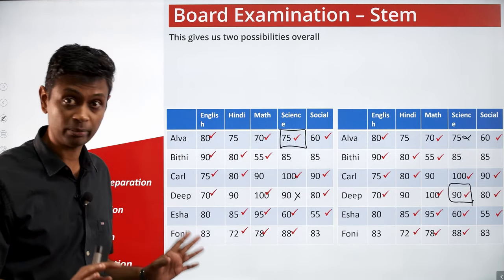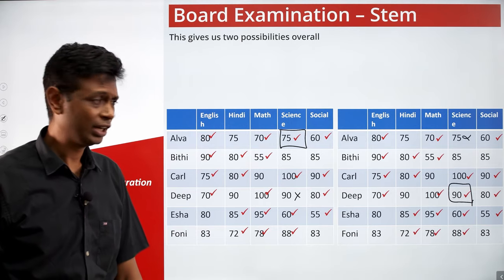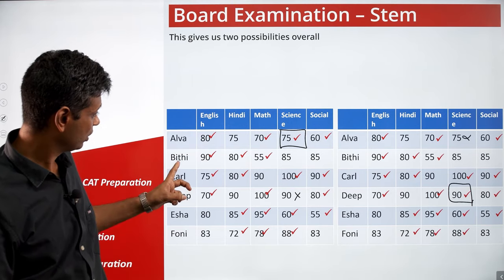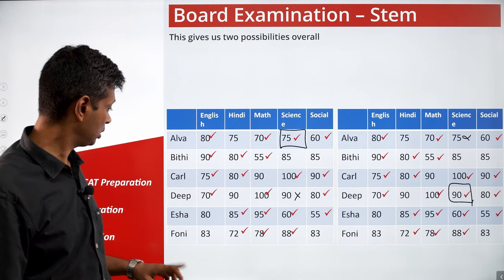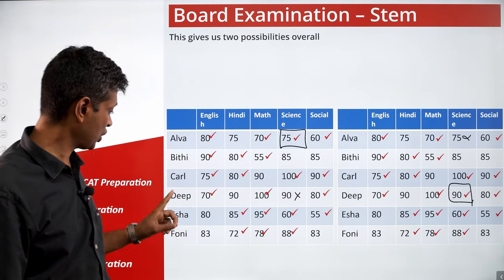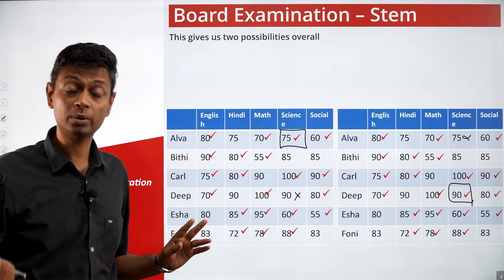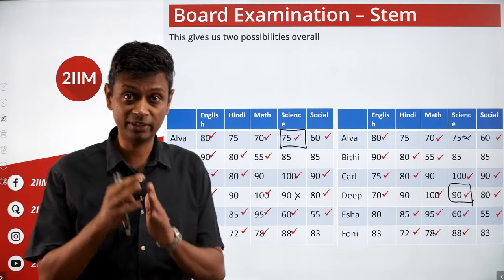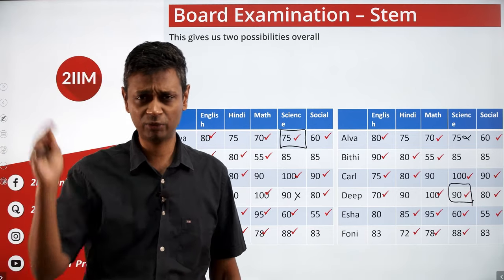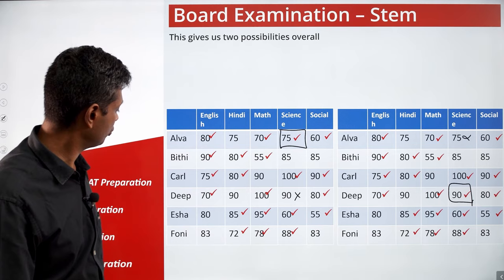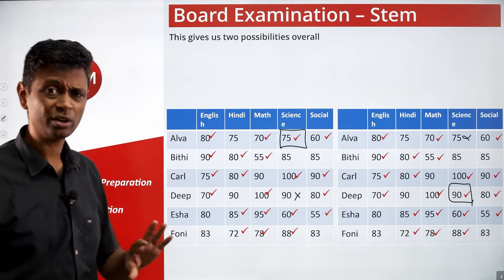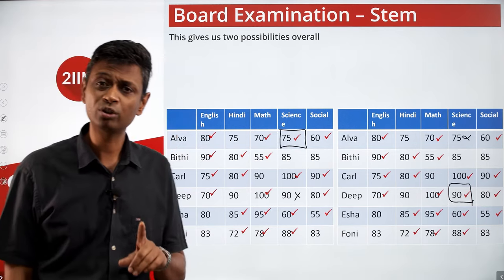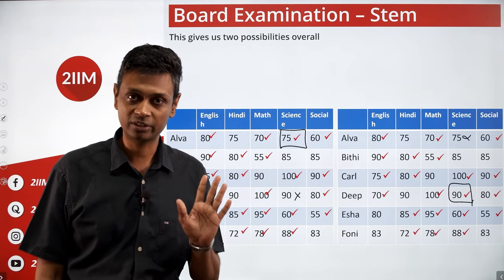After keeping everything in mind, we completed the whole grid. We know exactly which exams were taken by Biti, Karl, Isha, and Phony — which they took, which they skipped, and how the averages were calculated. The only remaining ambiguity is for Alba and Deep: one of them took Science and the other did not.